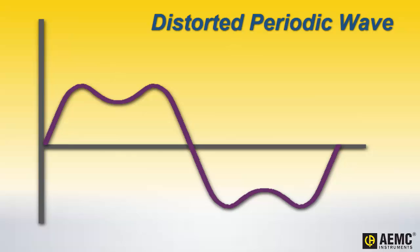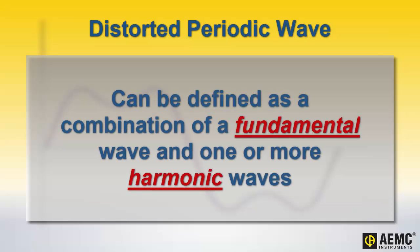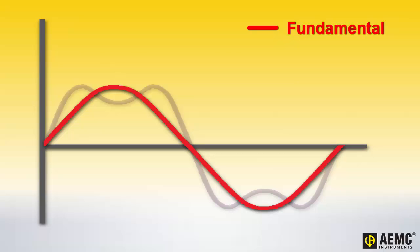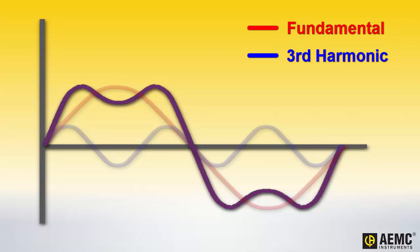To understand how this happens, it might be useful to work backwards and deconstruct this wave into its constituent components. A periodic wave, no matter how distorted, can be defined as the composite of a single primary or fundamental wave, and one or more so-called harmonic waves of varying wavelengths. For example, our illustration can be deconstructed into two waves: the fundamental wave, and a harmonic wave whose wavelength is one-third the fundamental. This second wave is therefore called the third harmonic. The combination of these two waves, the fundamental and the third harmonic, produces the distorted wave shown in our example.